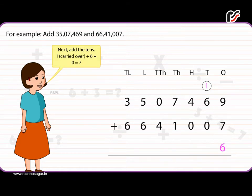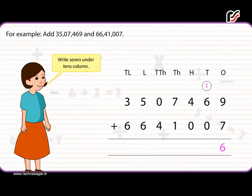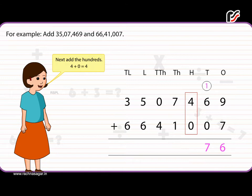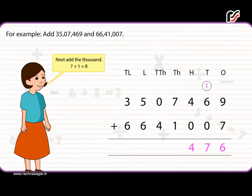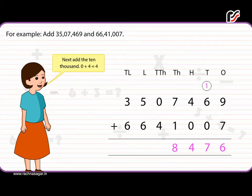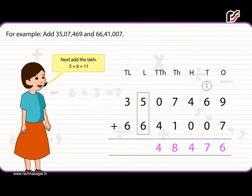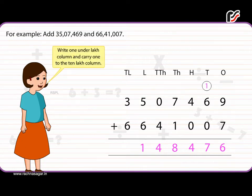9 plus 7 is equal to 16. Write 6 under the ones column and carry 1 to the next column. Next, add the tens: 1 carried over plus 6 plus 0 is equal to 7. Write 7 under the tens column. Next, add the hundreds: 4 plus 0 is equal to 4. Write 4 under the hundreds column. Next, add the thousands: 7 plus 1 is equal to 8. Write 8 under the thousands column. Next, add the ten-thousands: 0 plus 4 is equal to 4. Write 4 under the ten-thousands column. Next, add the lakhs: 5 plus 6 is equal to 11. Write 1 under the 1 lakh column and carry 1 to the 10 lakh column.